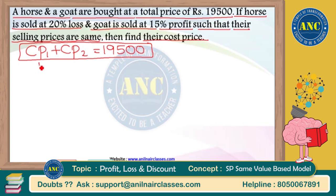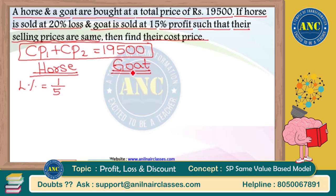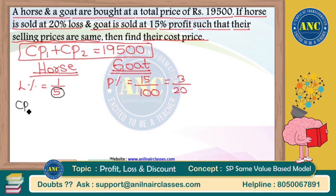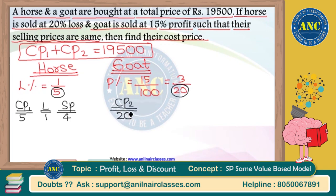Every question has a variation. The horse is sold at a loss of 20% — that is 1 by 5. The goat is sold at a profit of 15% — that is 15/100 = 3/20. For the horse: denominator is cost price = 5, loss numerator = 1, so selling price = 5 - 1 = 4 rupees. For the goat: cost price = 20, profit = 3 rupees, so selling price = 20 + 3 = 23 rupees.